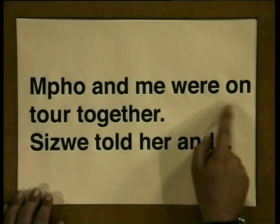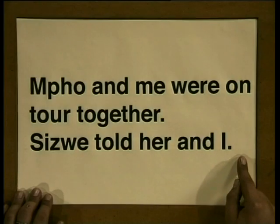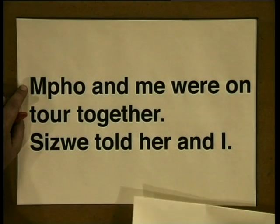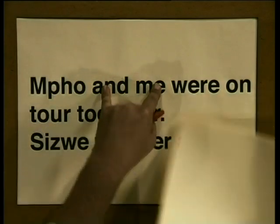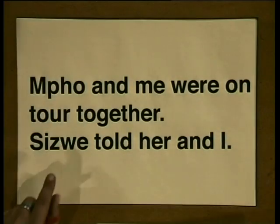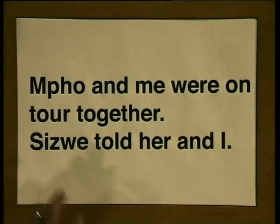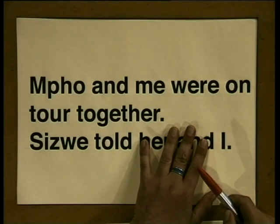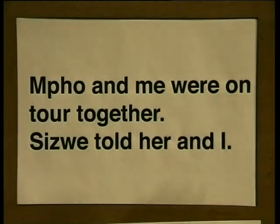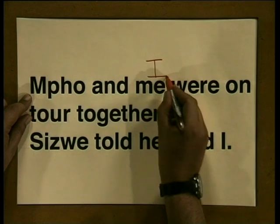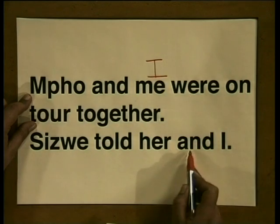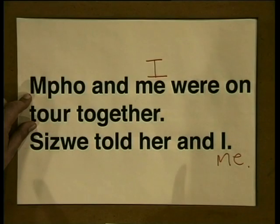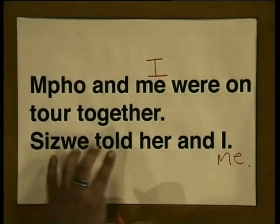So be careful that how we pronounce things doesn't lead you to use the incorrect word. Can you spot the errors in these two sentences? They read: Mpo and me were on tour together, and Siswe told her and I. The trick I'm going to teach you is quite simple. I take away one of the words. If I were to say Mpo was on tour, it would be right. But if I were to say me was on tour, it wouldn't be correct. What about Siswe told her? Well, that works. But Siswe told I — that's not correct. So ideally, you're changing the pronouns. It becomes: Mpo and I were on tour together, as opposed to Siswe told her and me. Because: I was on tour, and Siswe told me.